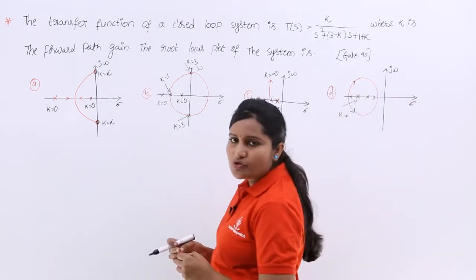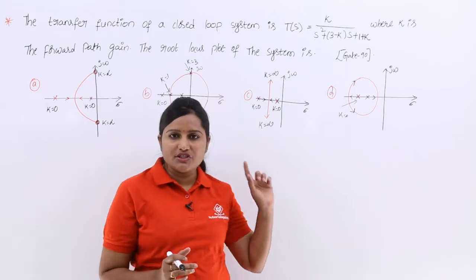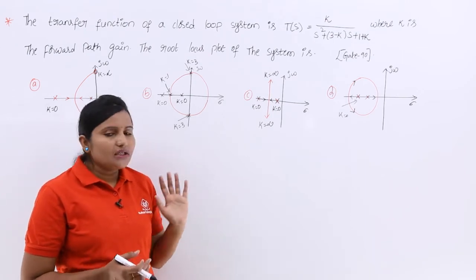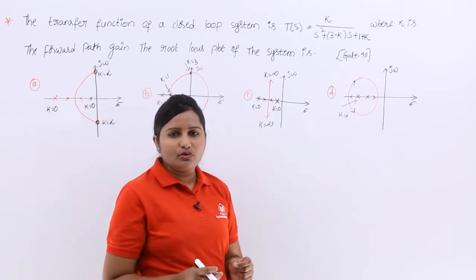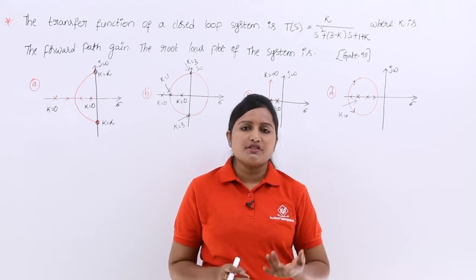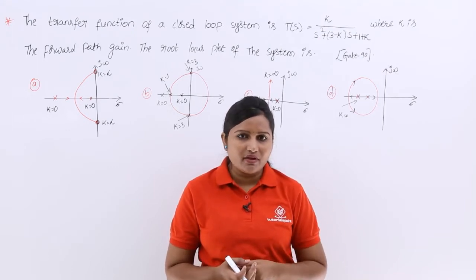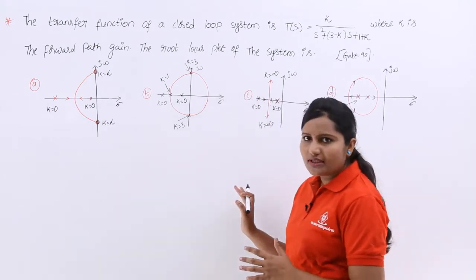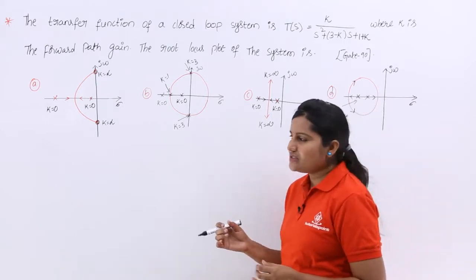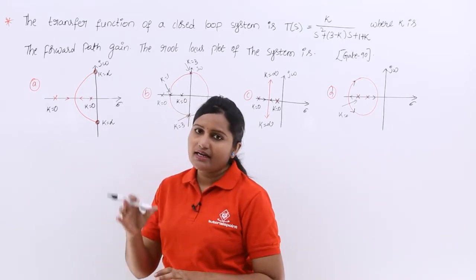What is given here is the closed loop transfer function of the control system. From this closed loop transfer function, they are asking which root locus diagram suits this closed loop control system. The options are not given with all calculated points — they just give a shape and the number of poles on the real and imaginary axis.